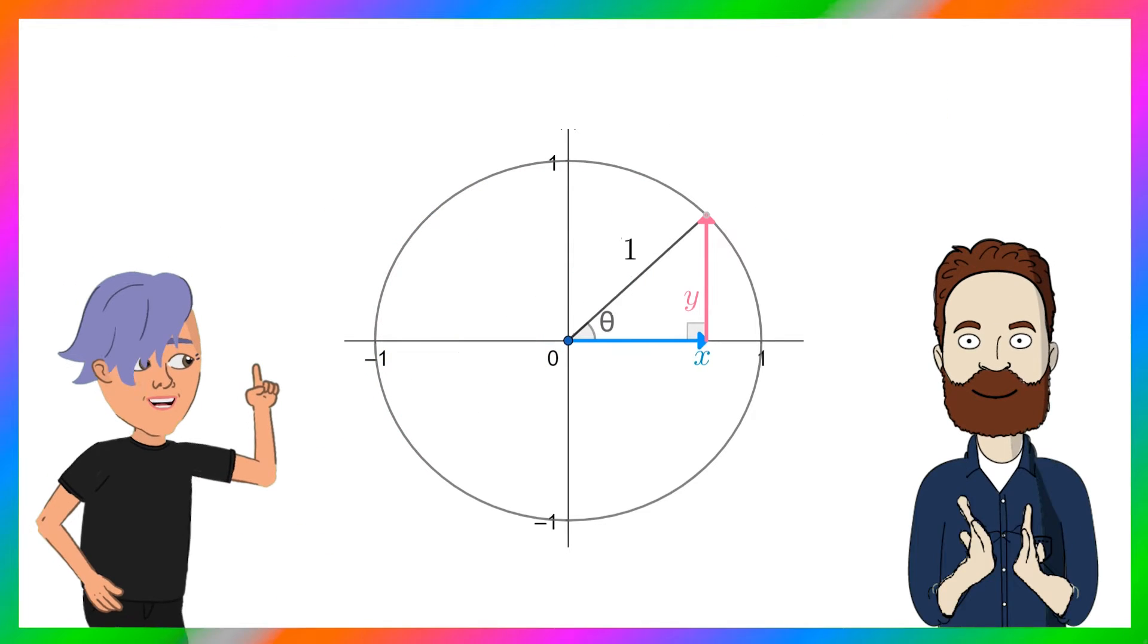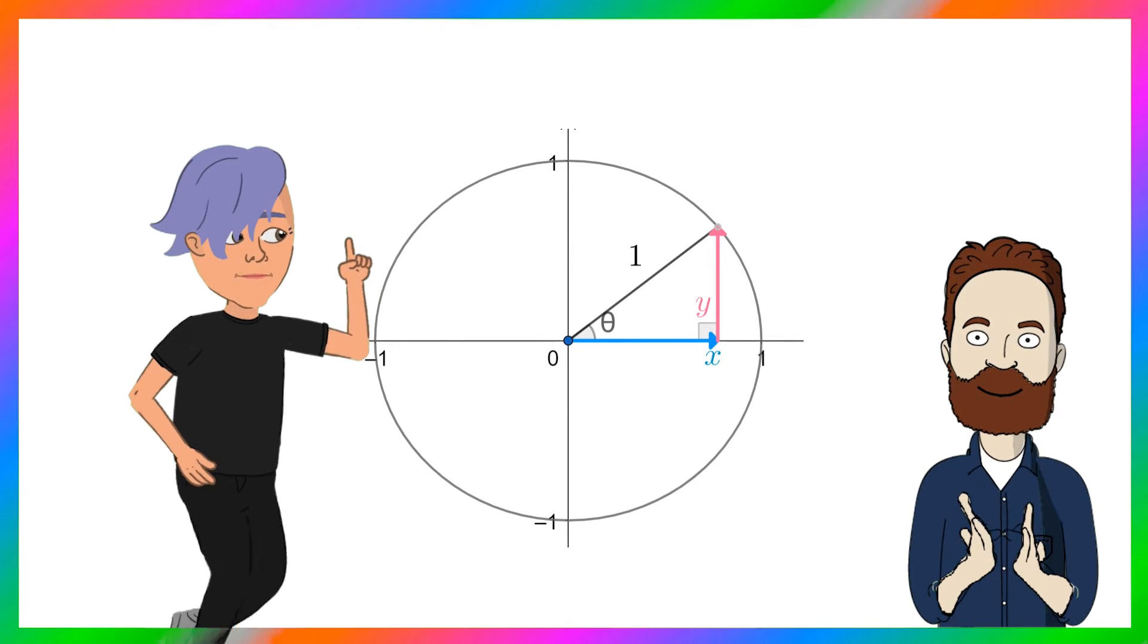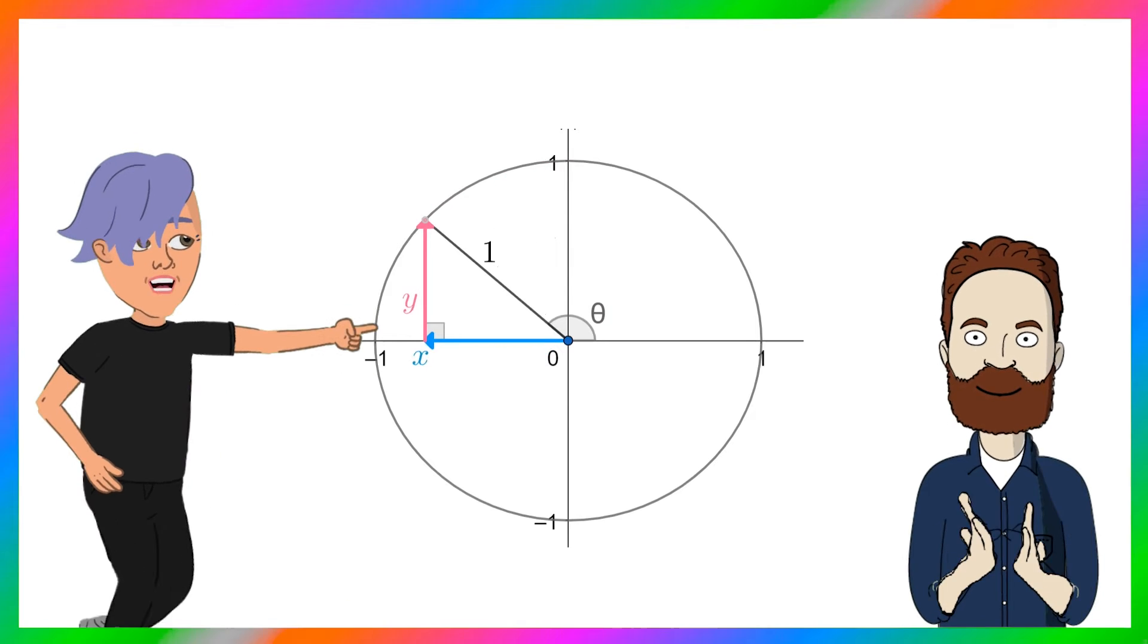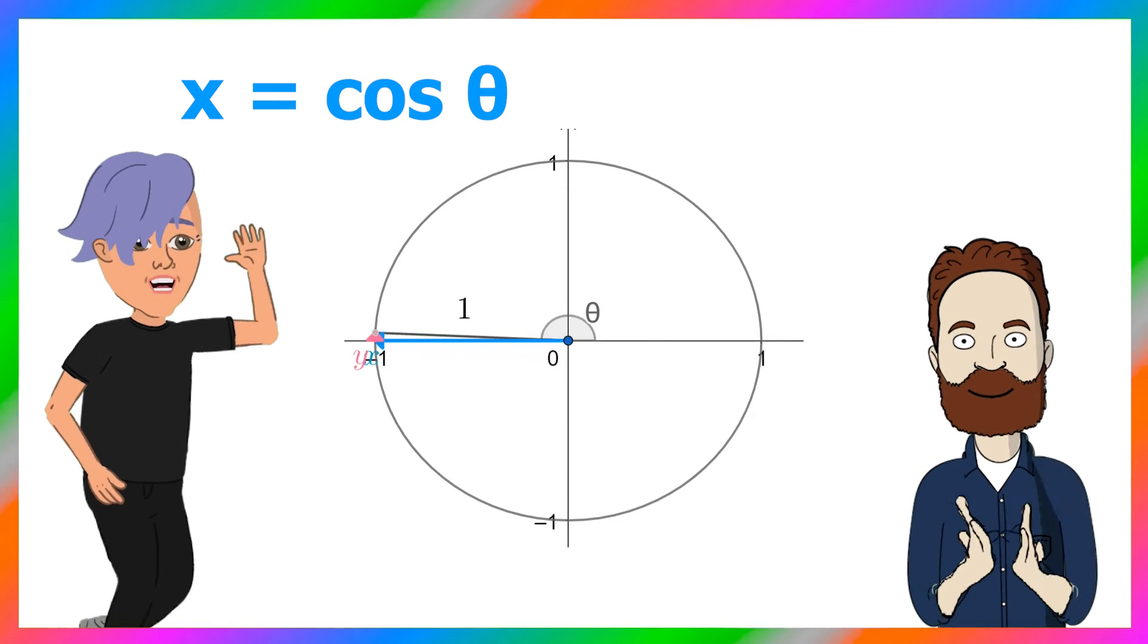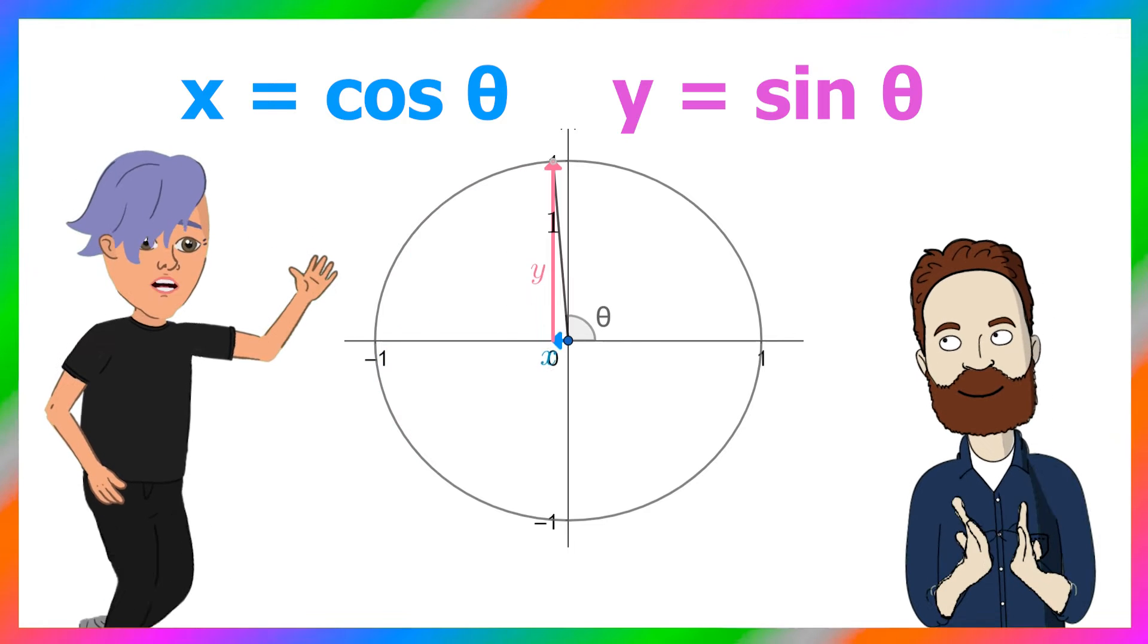So wake me up to trigonometry. Cause on the unit circle I can see that the cosine is the x value, the sine is the y, and for tan I can divide sine over cosine.